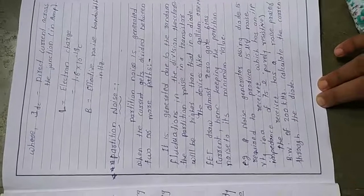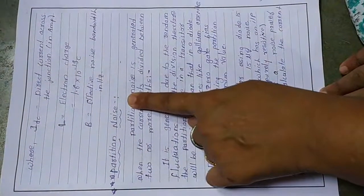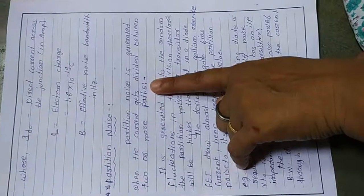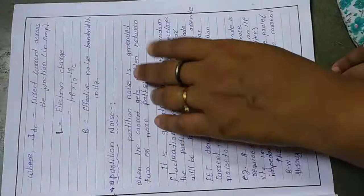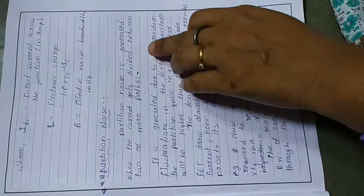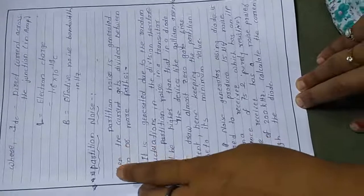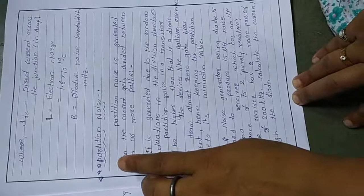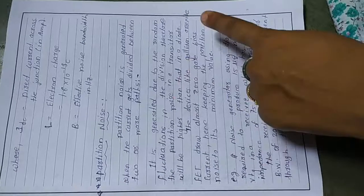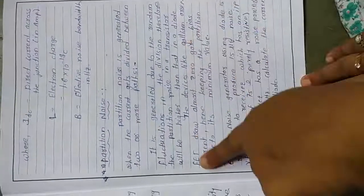The second type of internal noise is partition noise. Partition noise is generated when current gets divided between two or more paths. When current flowing through a circuit is divided into two or more parts, partition noise is generated due to random fluctuation in the division. The partition noise level will be higher than that of diodes, due to the random motion of holes and electrons.